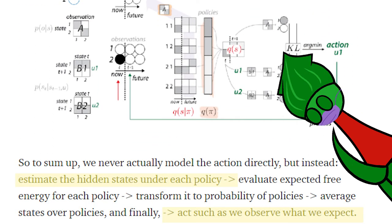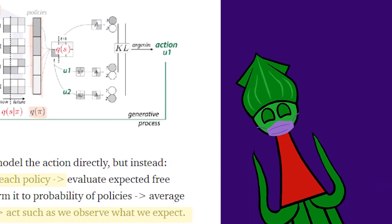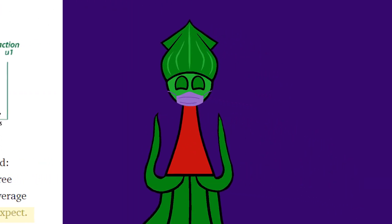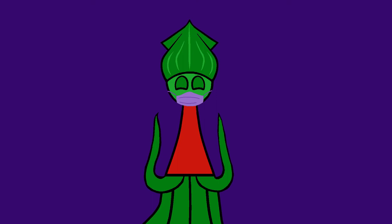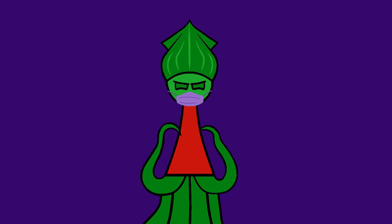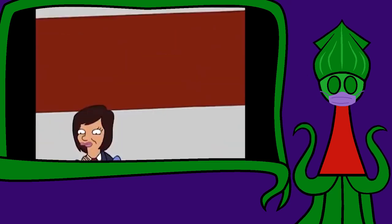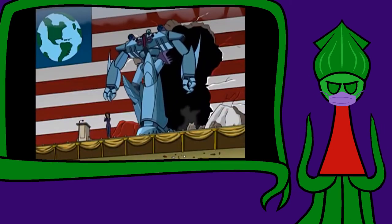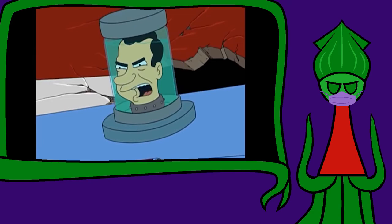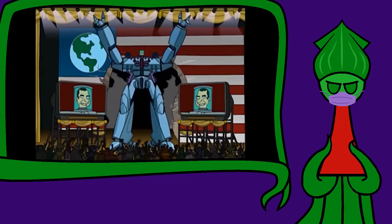To put it the tutorial's way, we start by estimating the hidden states under each policy, and end up acting such as we observe what we expect. No wonder motivational speakers are all about optimism and vision. The numbers say you go where you aim. Not everyone who thinks they become president becomes president. But no one who thinks they won't become president becomes president. They don't bother taking any of the steps.